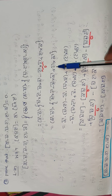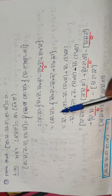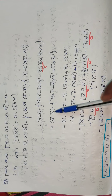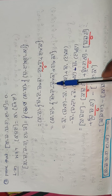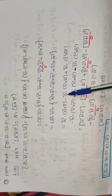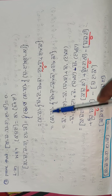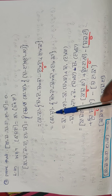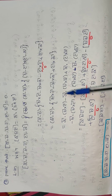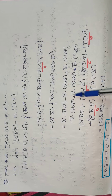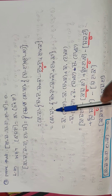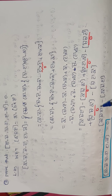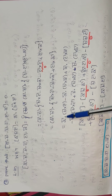Now (a minus b) dot [b cross c minus b cross a plus c cross a]. Taking the dot product: a dot (b cross c), minus a dot (b cross c), plus a dot (c cross a), then minus b dot (b cross c), plus b dot (b cross a), minus b dot (c cross a).